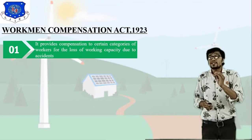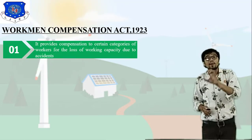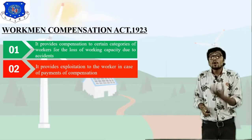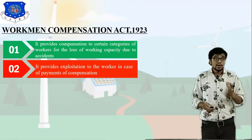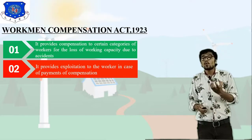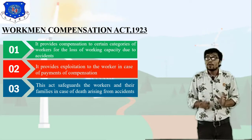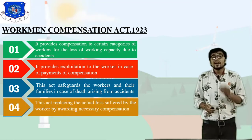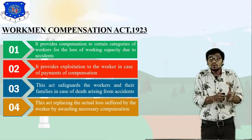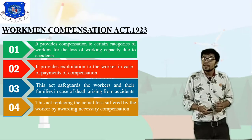The Workman Compensation Act is the combination of two words — workman or worker, and compensation. It provides compensation to workers in case of injury or loss. This act safeguards the worker and their family. Most importantly, this act replaces the actual loss suffered by the worker by providing the necessary compensation. This is what the Workman Compensation Act 1923 covers.